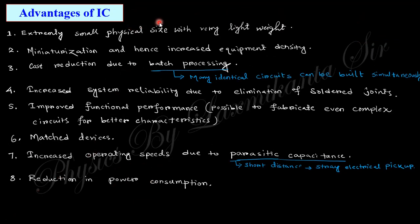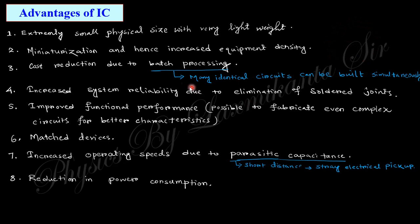Now let's look at the advantages of integrated circuits. First, extremely small physical size with very low weight — miniaturized, hence increasing equipment density, since a large number of components are accumulated in a small region. Second, cost reduction due to batch processing — many identical circuits can be built simultaneously from a single silicon wafer. Batch processing means a large number of identical circuits are produced in a single process, reducing production cost.